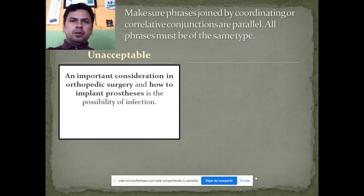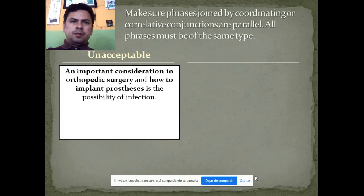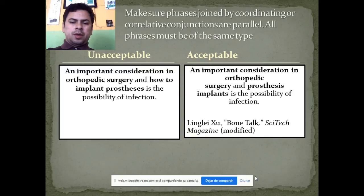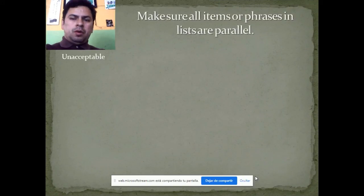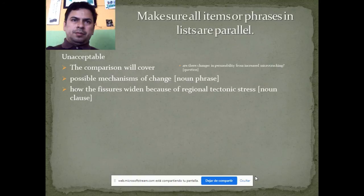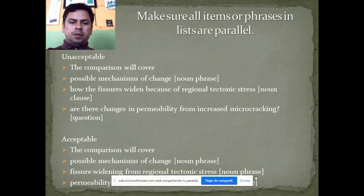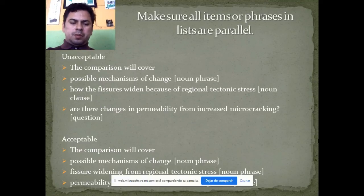Unacceptable: 'An important consideration of orthopedic surgery and how to implant the prosthetics in the possibility of infection.' Acceptable: 'An important consideration of orthopedic surgery: the prosthetics implanting and the possibility of infection.' Make sure all items in a phrase list are parallel. Unacceptable: 'The comparison will cover possibility mechanism of change, how the figure is wide because of the original tectonic stress, and the change in permeability from increased cracking.' Acceptable: 'The comparison will cover the possibility mechanism of change, the formation of tectonic stress, and permeability from increased microcrackngs.'